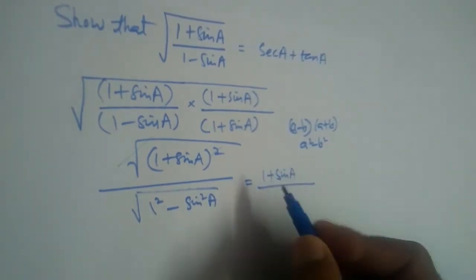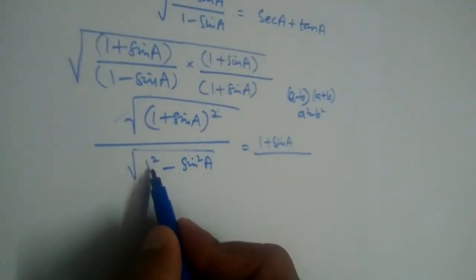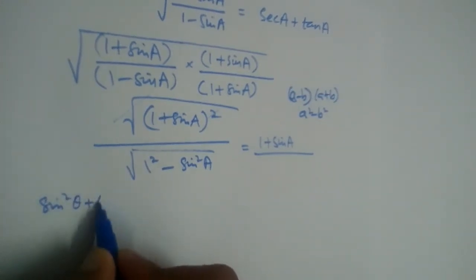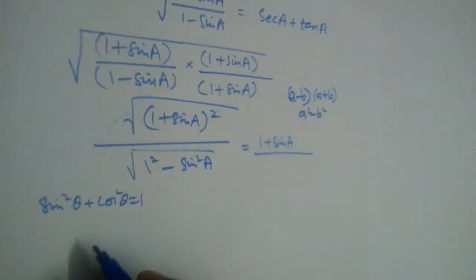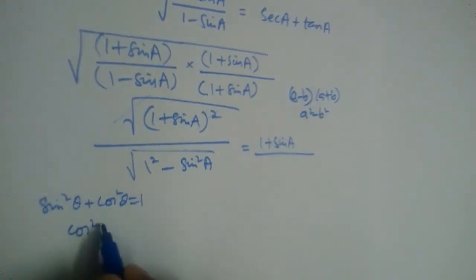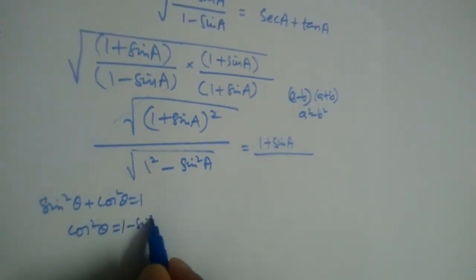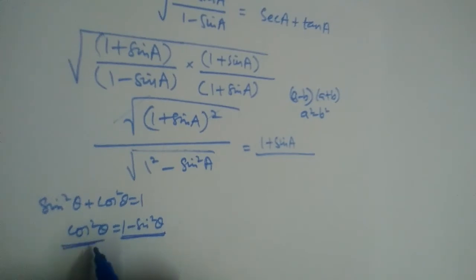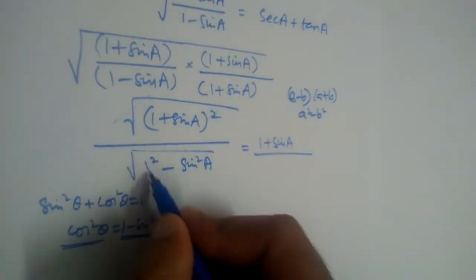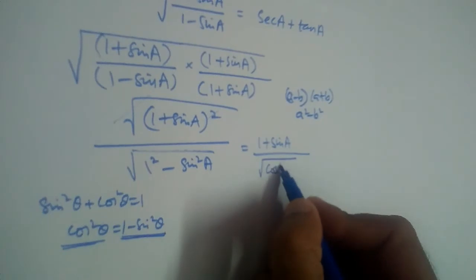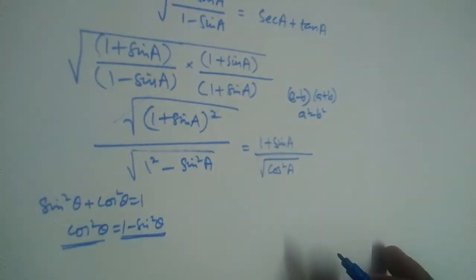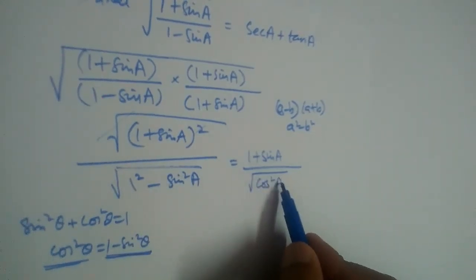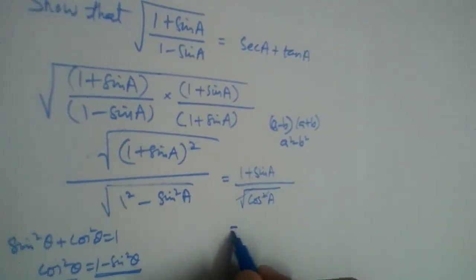Now we use the identity: sin²θ + cos²θ = 1. Rearranging, cos²θ = 1 - sin²θ. So in place of (1 - sin²A) in the denominator, we write cos²A. The square and the root cancel, leaving (1 + sinA) divided by cosA.